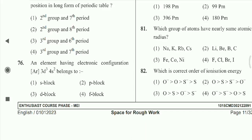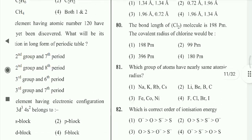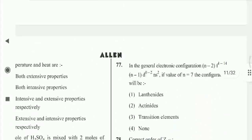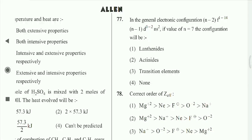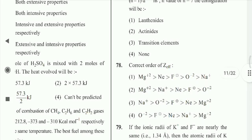Question 76: An element having electronic configuration 3d and 4s² belongs to the d-block. Question 77: In the general electronic configuration (n-2)f¹⁻¹⁴ (n-1)d⁰⁻² ns², if the value of n equals 7, the configuration is that of actinides. Option 2nd is correct.